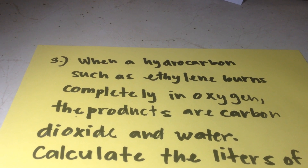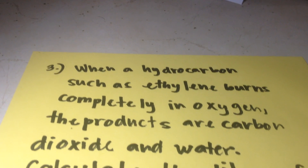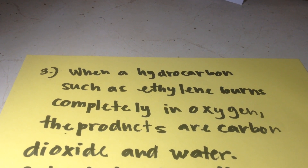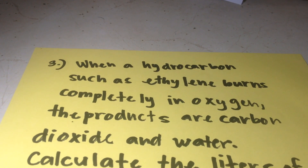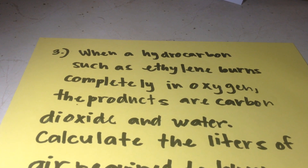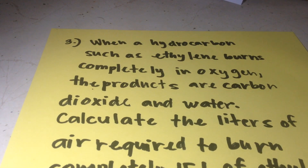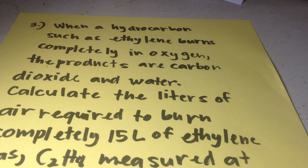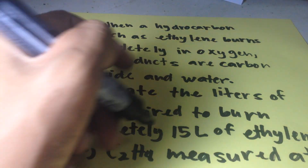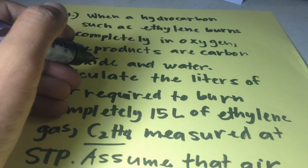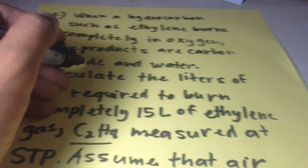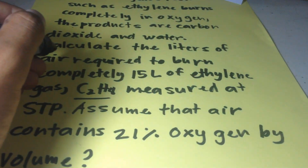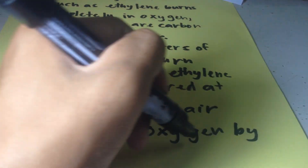Hello everyone. In this video, let's continue on problem number 3. When a hydrocarbon such as ethylene burns completely in oxygen, the products are carbon dioxide and water. Calculate the liters of air required to burn completely 15 liters of ethylene gas, C₂H₄, measured at STP. Assume that air contains 21% of oxygen by volume.